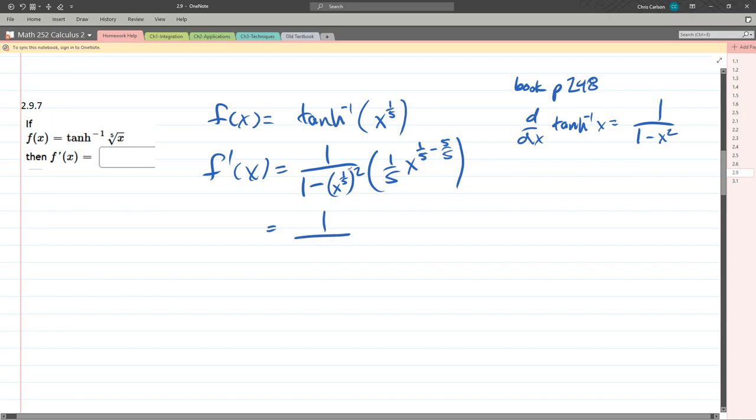So how do we do power of a power? We multiply. So 1/5th times 2 is 2/5ths. If you're ever in doubt, remember, what does squared mean?